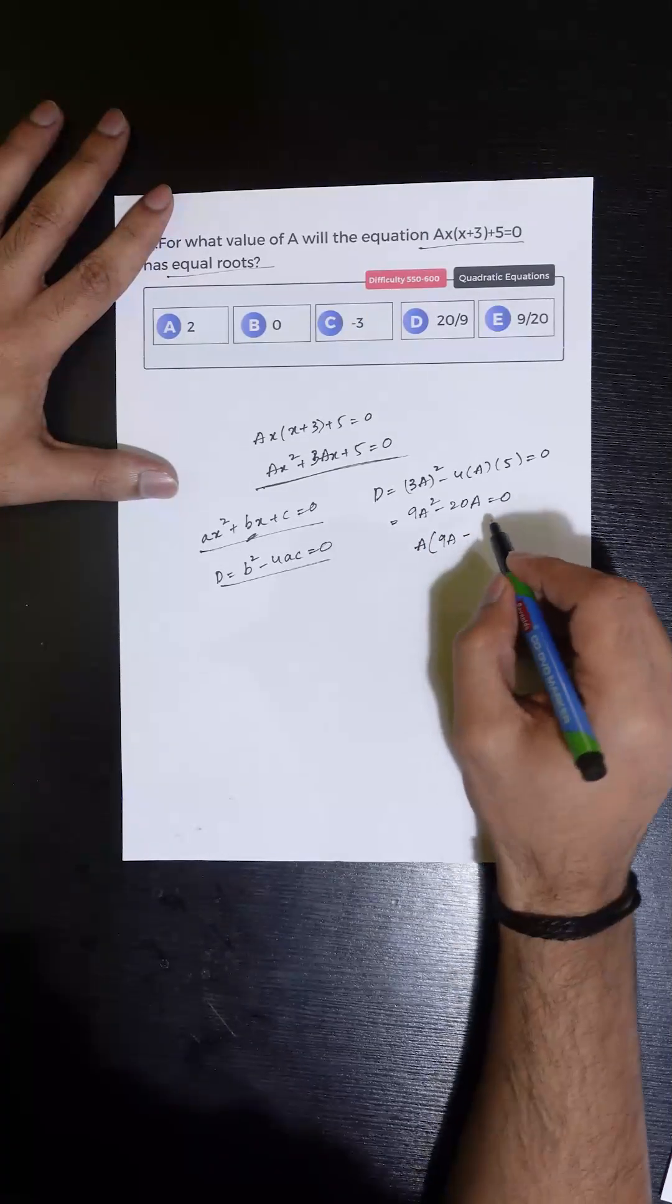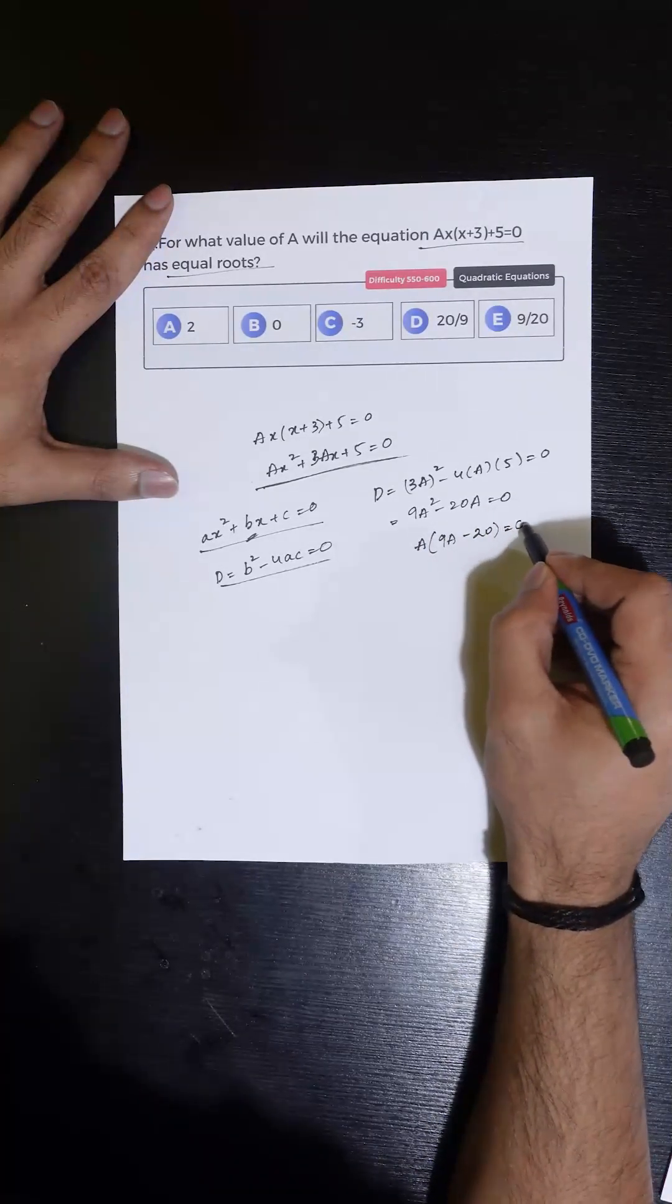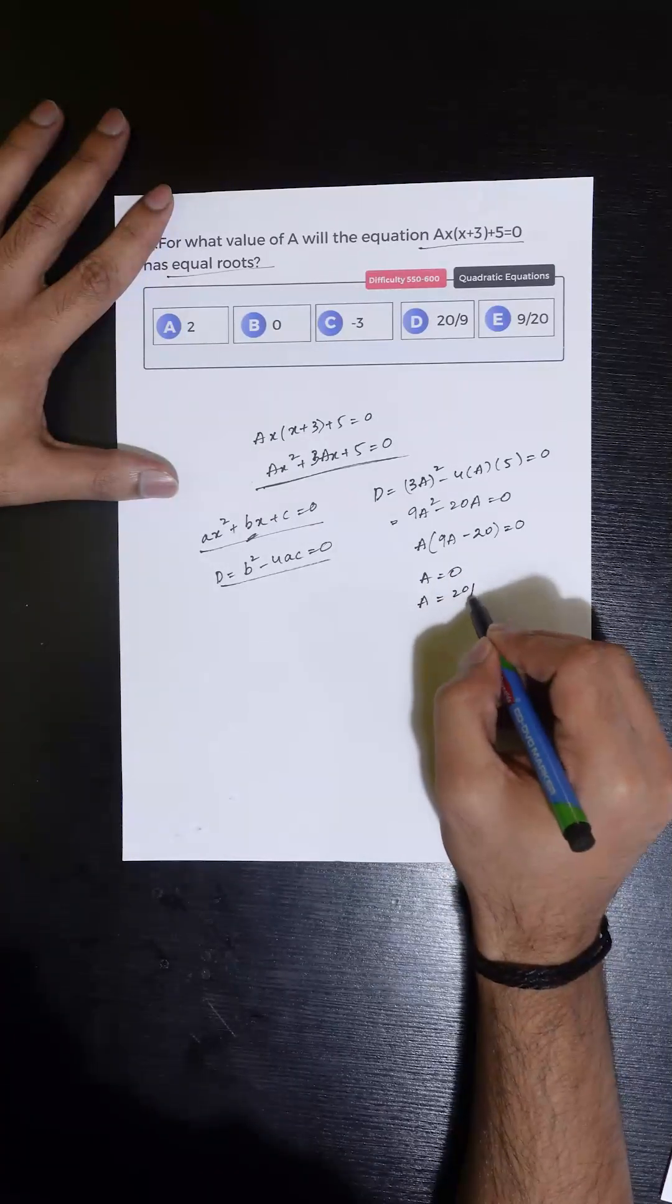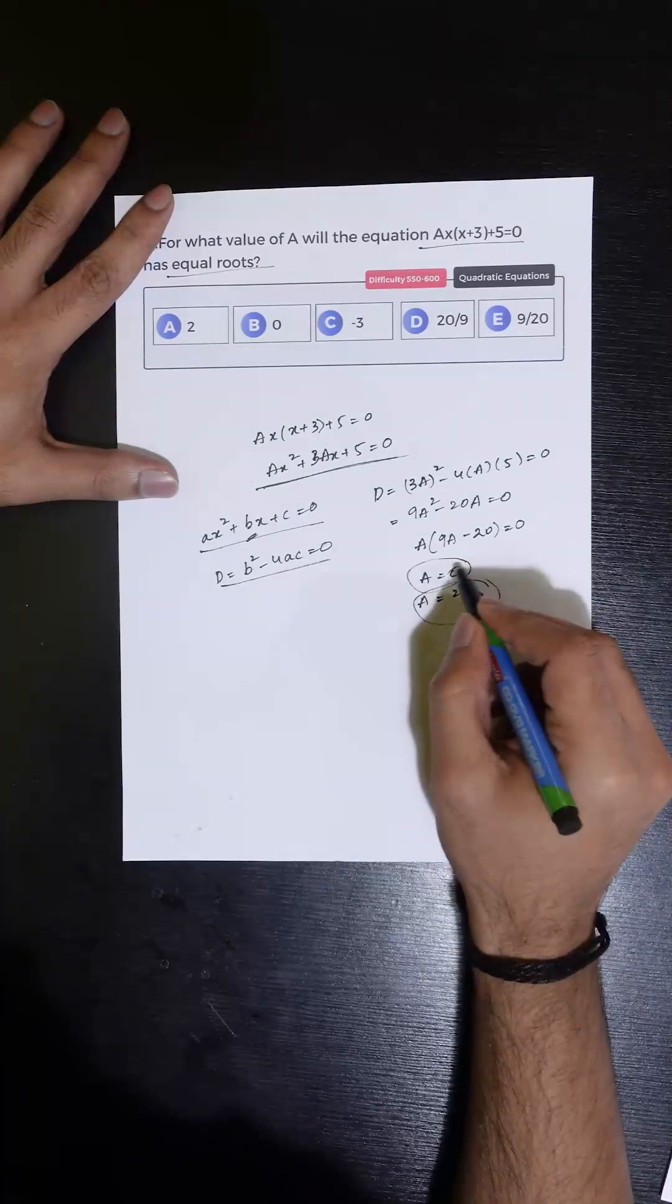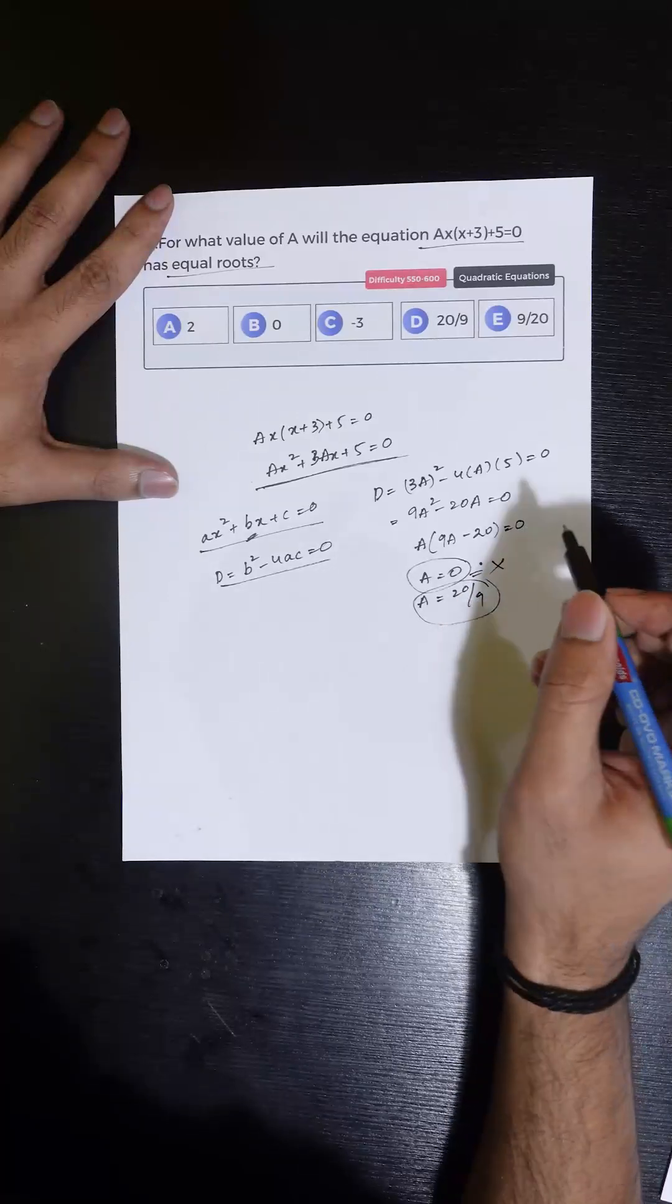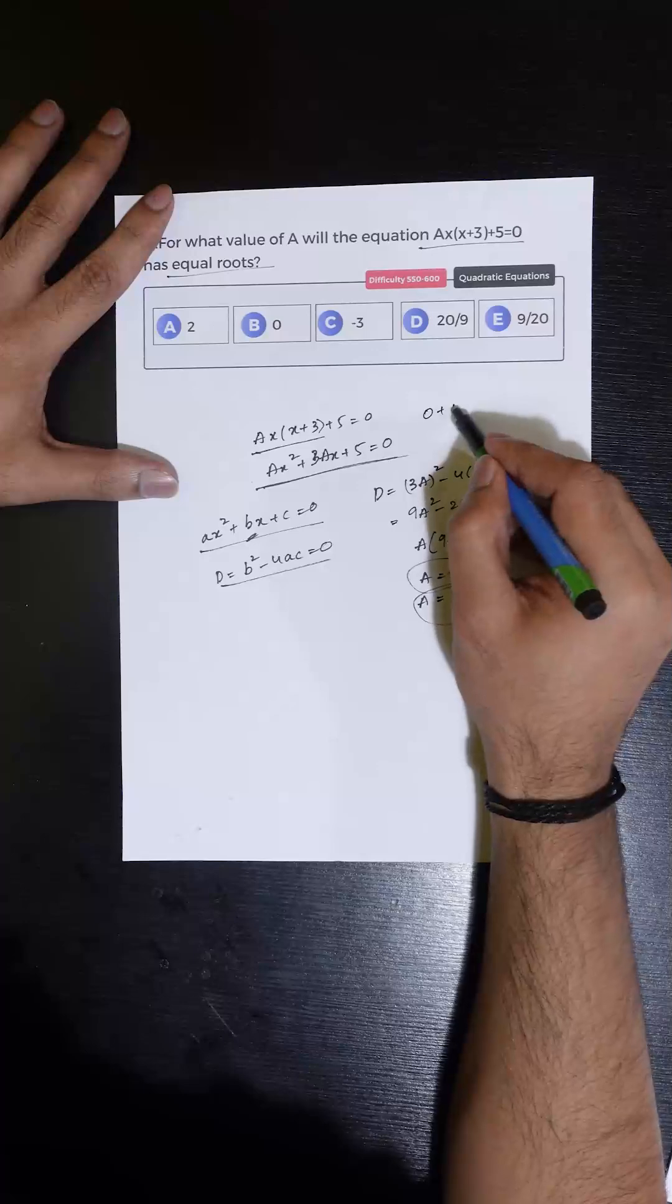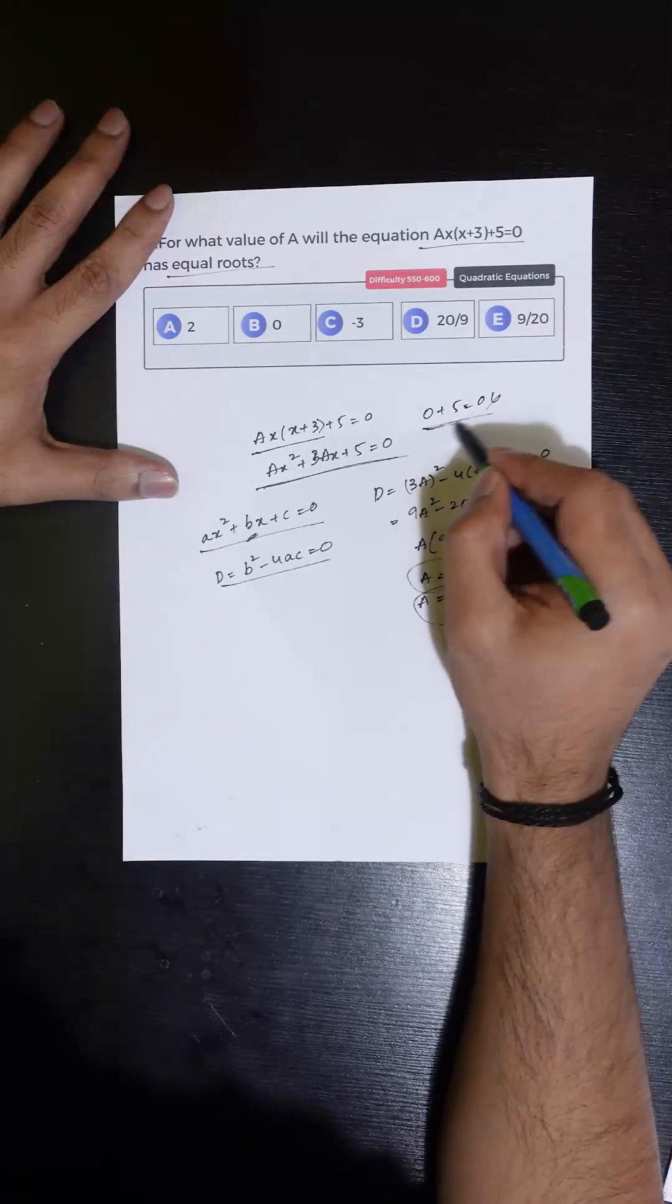So the value of A can be either 0 or 20/9, but the value of A equal to 0 must be eliminated because when we substitute the value of A to be 0, we get 5 = 0, which is not possible.